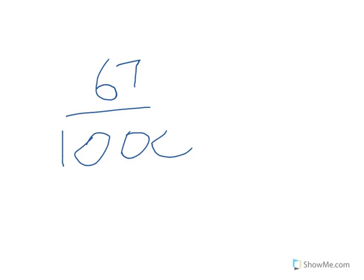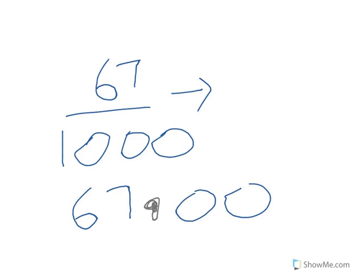So I will rewrite it, 67 point, and I have 00. So I will make the point jump backwards because it's being divided three times, because we have three zeros in a thousand.